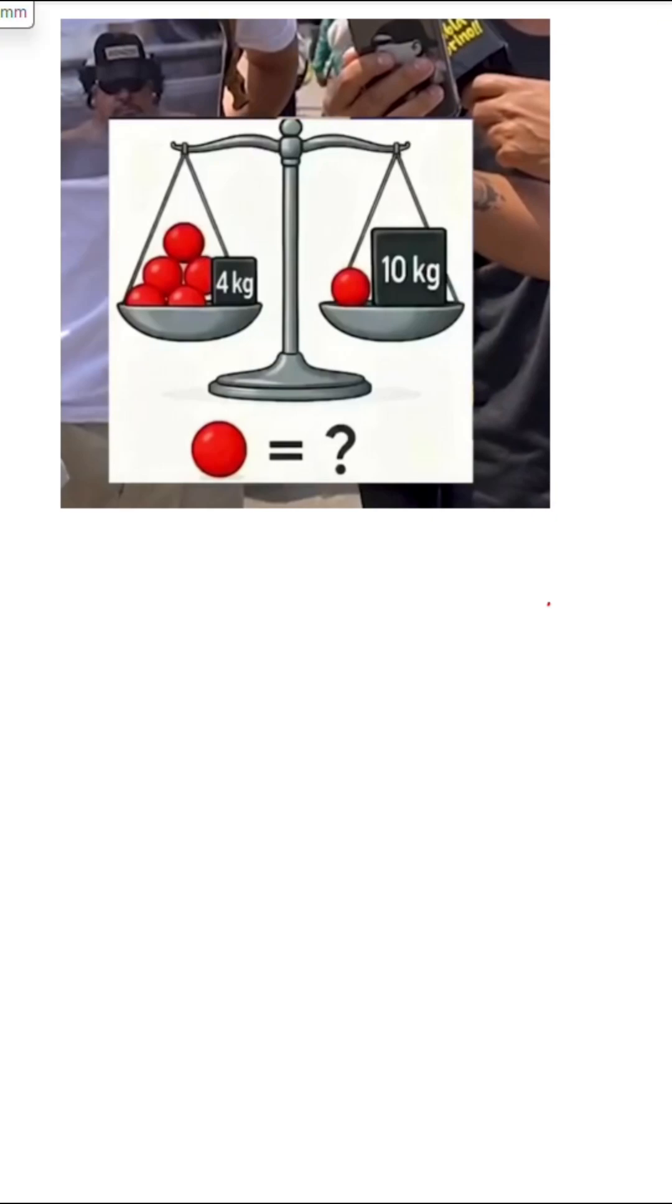So let's do that. We don't know the weight of the red ball, and we have 1, 2, 3, 4, 5 of them on this side. So we're going to say 5x plus that 4 kg—I'm just going to leave it as 4—is going to be equal to 1x, or just x, and then 10 kg. So x plus 10.